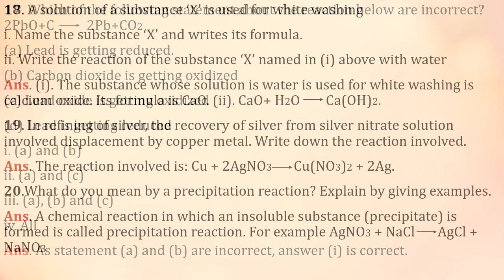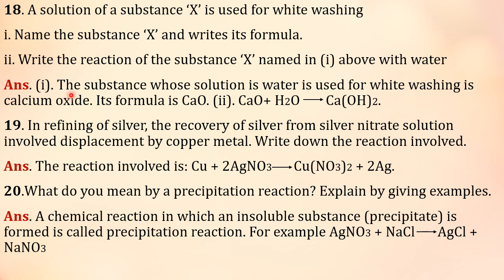Next question: Substance X is used for white washing. Name the substance X and write its formula. Write the reaction of the substance X named in one above with water. Substance X is used for white washing, same chuna brought from the market for white washing. So what is X here? X is CaO. And CaO with water gives Ca(OH)2. This is slaked lime. This we apply on the wall. So this is the reaction. So X is CaO.